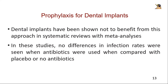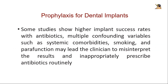Dental implants, although previously thought to require pre-operative antibiotics for infection prevention, have been shown not to benefit from this approach in systematic reviews with meta-analysis. In these studies, no differences in infection rate were seen when antibiotics were used compared with placebo or no antibiotics. Although some studies show higher implant success rates with antibiotics, multiple confounding variables — such as systemic comorbidities, smoking, or parafunction habits — may lead the clinician to misinterpret the results and inappropriately prescribe antibiotics routinely.